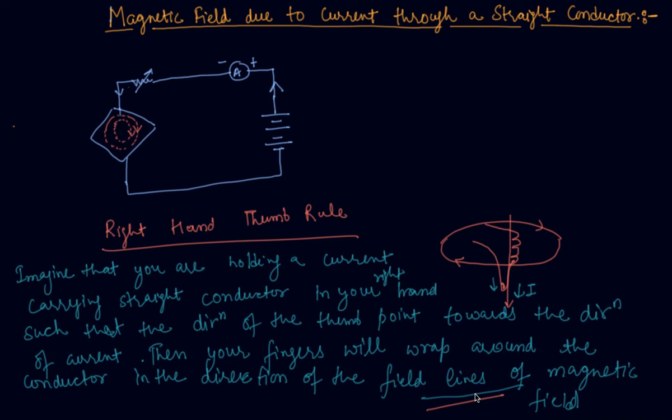I hope you are pretty clear about what the right-hand thumb rule is. In the next class we will discuss the magnetic field due to a circular loop. Stay tuned for the next lecture — thank you and happy learning.